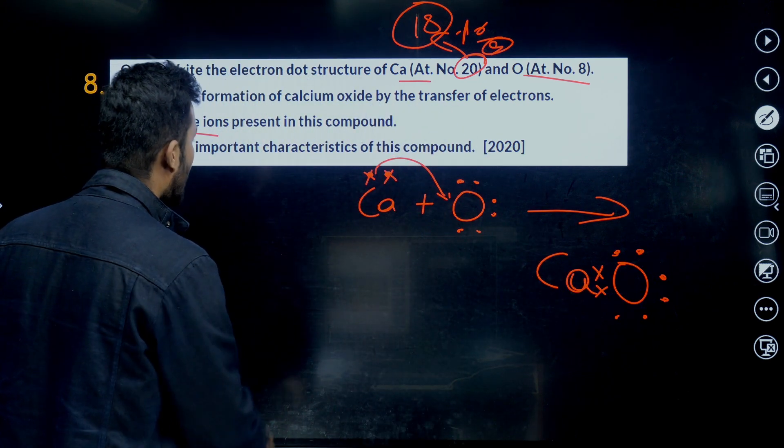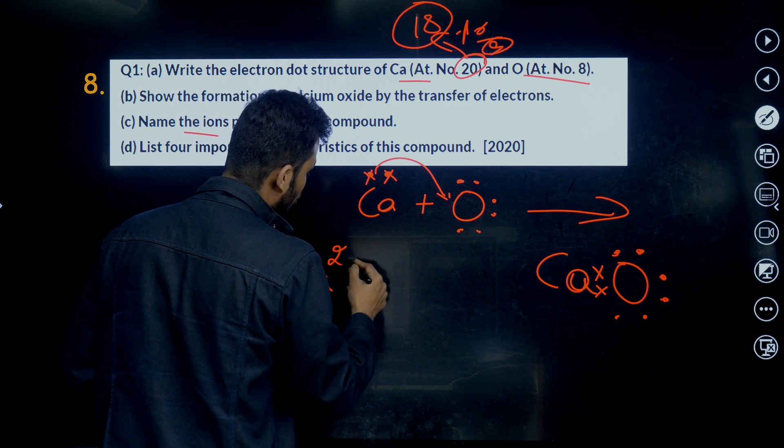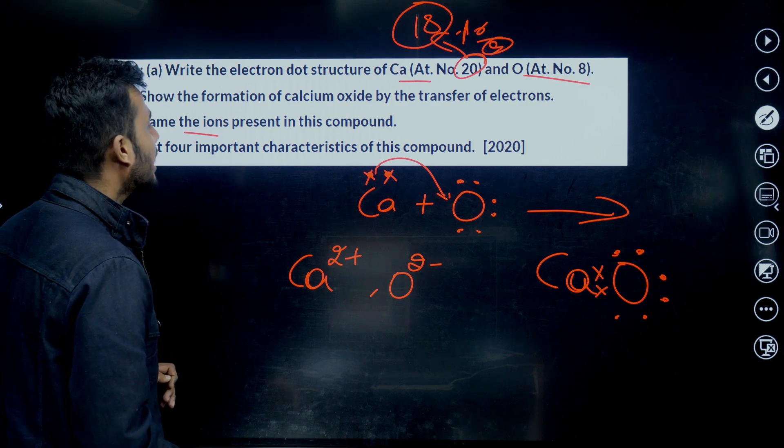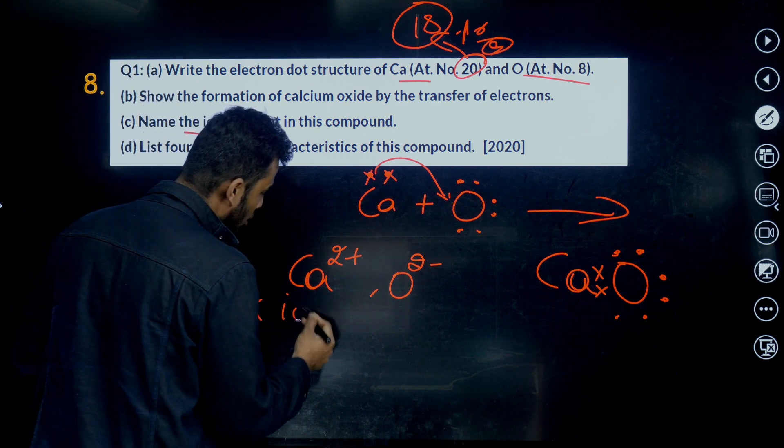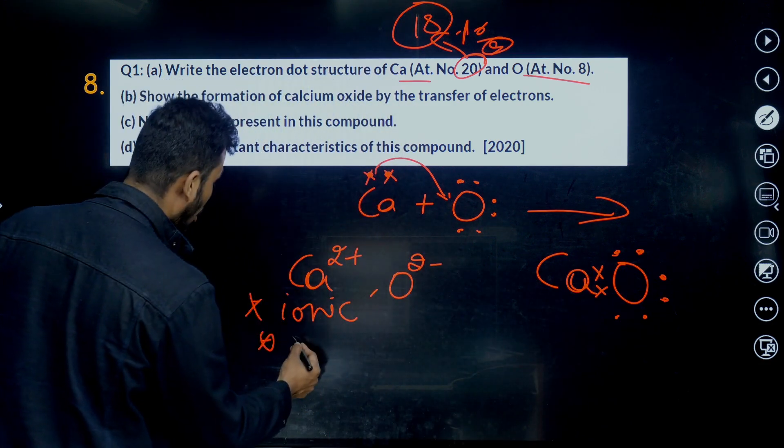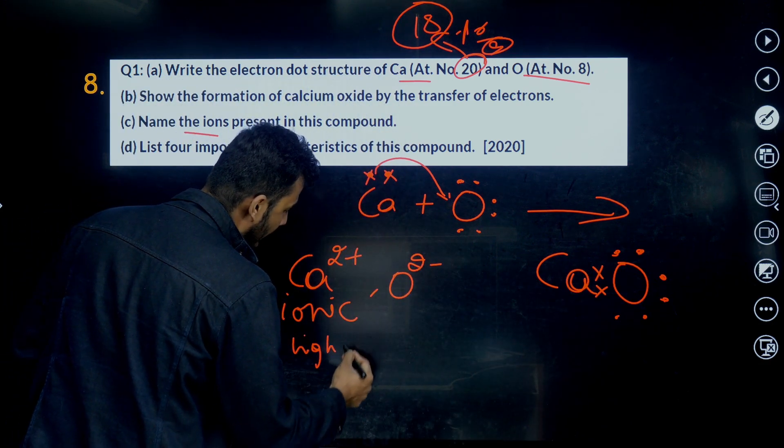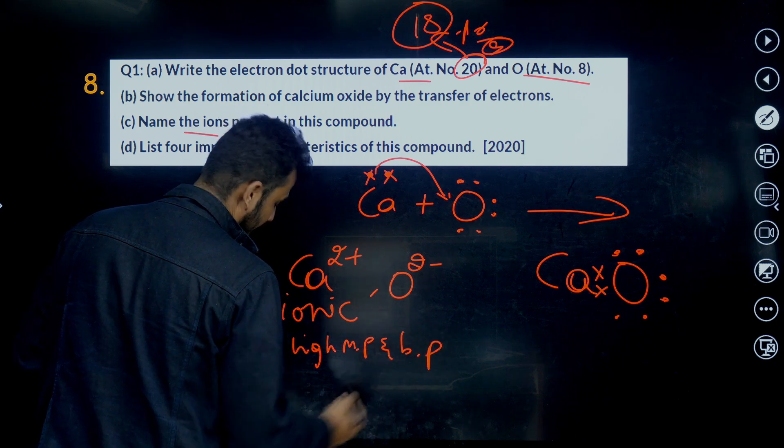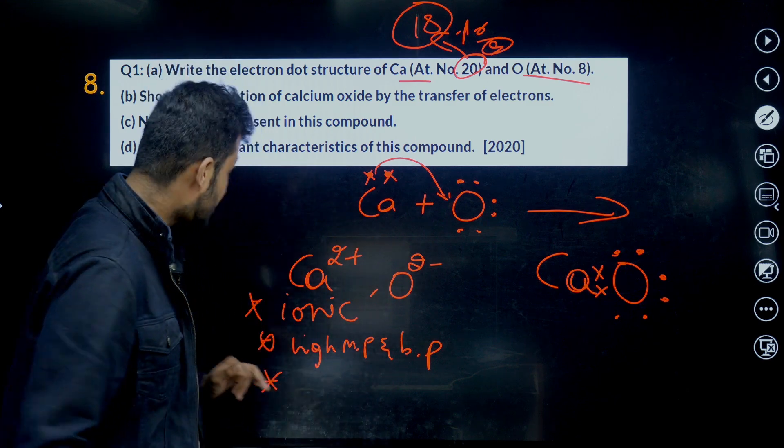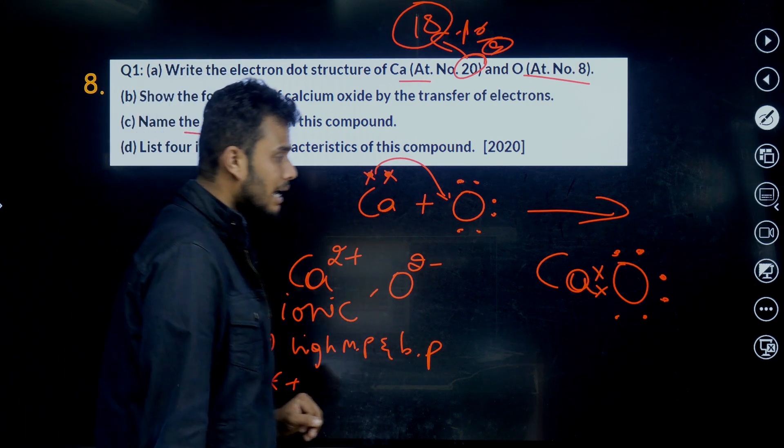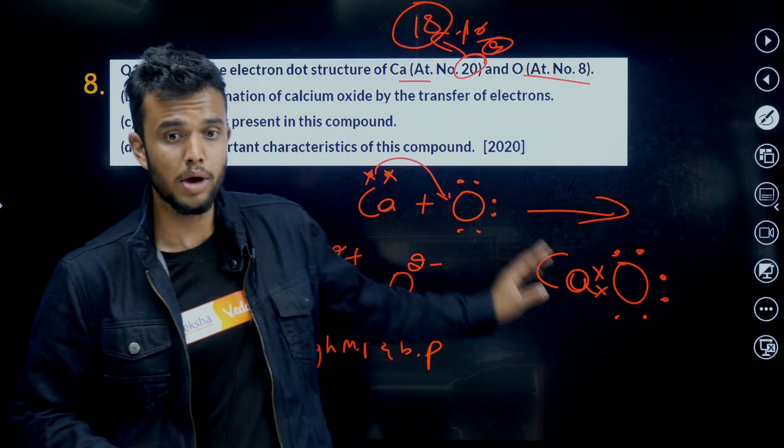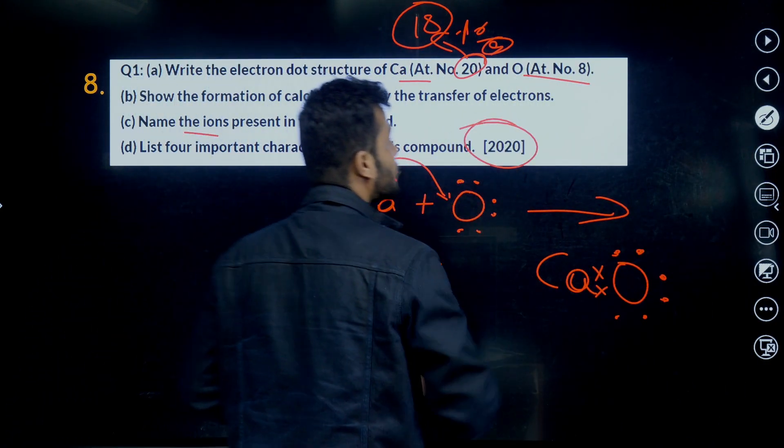Name the ions present in the compound. Which ions present here? Ca2+ ion and O2- ions. Cation and anion. List four important characteristics of this compound. These compounds are also called ionic compounds. First property: these compounds have high melting point and boiling point. What's about second one? These are good conductors of electricity at their molten state. And also these forms are very strong one. Third one. And what is the fourth one? Let me know in comment section.